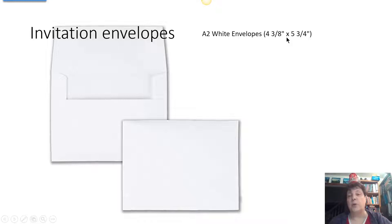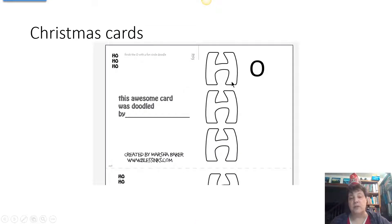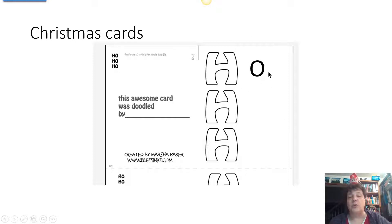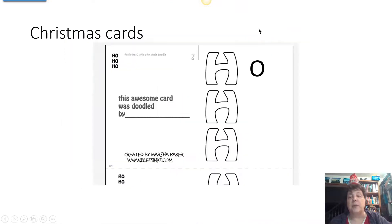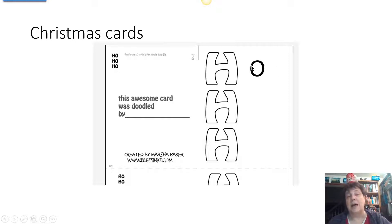You do need A2 envelope sizes — four and three-quarters by five and three-quarters — that's the invitation-size envelope for your Christmas cards. Here's what the Christmas cards look like: there are big fat O's. This is the back and this is the front. On your printable the O is not actually printed — you draw in your own O's. On a full-size sheet the O's are fairly large, but if you're doing several, maybe trace the bottom of a small Dixie cup — something about one to two inches — to draw your circles.